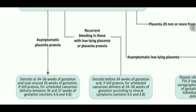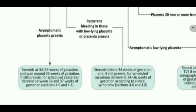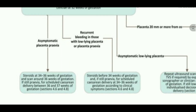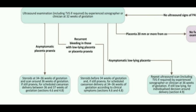For asymptomatic placenta previa patients — where the placenta still covers the os — we give steroid cover at 34 to 36 weeks of gestation, because the patient can become symptomatic at any time. We then rescan around 36 weeks of gestation, and if still placenta previa, we schedule cesarean delivery between 36 to 37 weeks.